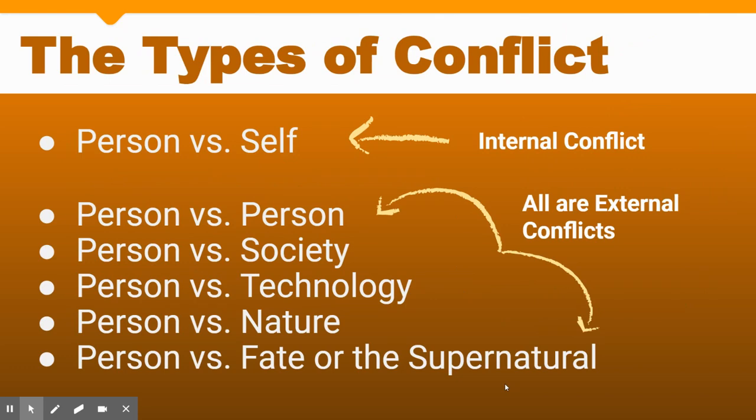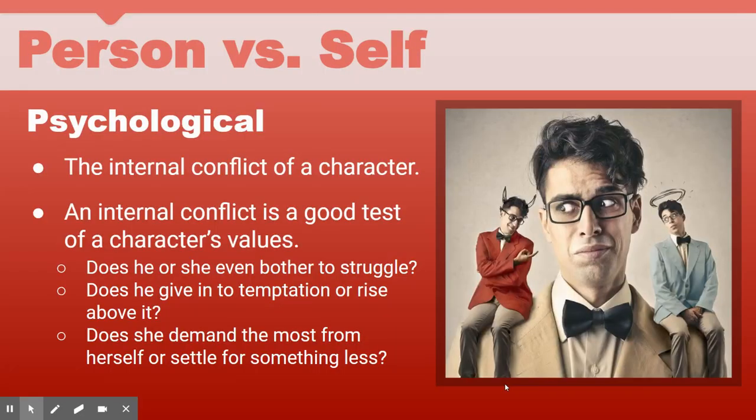Here's a preview of the six different types of conflict we're going to cover. The first is in the category of internal conflict: person versus themselves. The rest are external conflicts — person versus person, person versus society, person versus technology, person versus nature, and person versus fate or the supernatural. We'll discuss all of these in more detail, starting with person versus self.